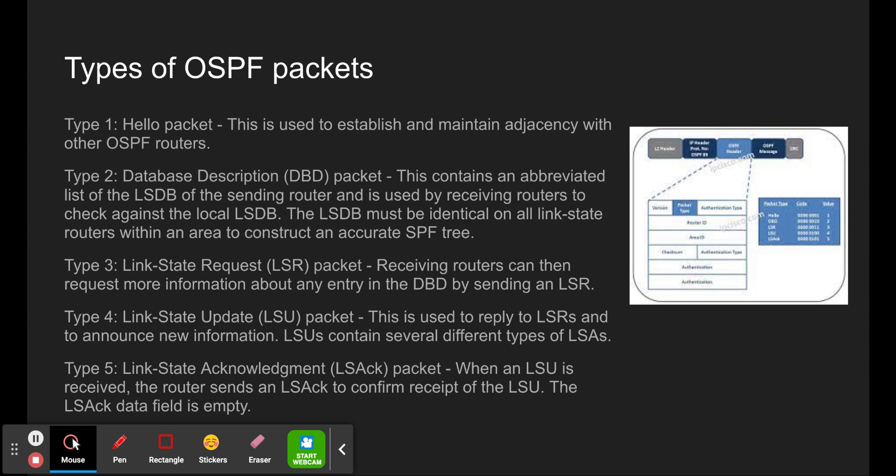Type 3 is the Link State Request (LSR) packet. Receiving routers can request more information about any entry in the DBD by sending an LSR. Type 4 is the Link State Update (LSU) packet, used to reply to LSRs and announce new information; LSUs contain several different types of LSAs. Type 5 is the Link State Acknowledgement packet. When an LSU is received, the router sends an LSAck to confirm receipt of the LSU, and the LSAck data field is empty.